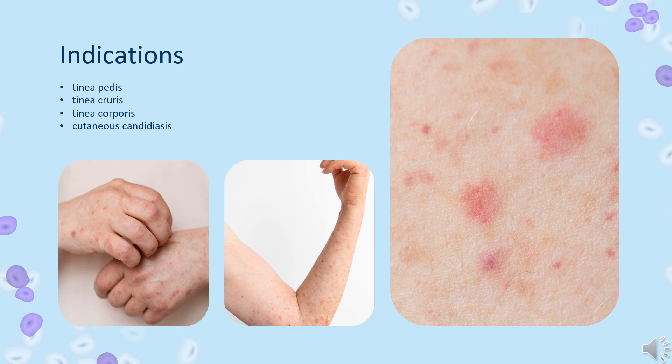Econazole is indicated for topical application in the treatment of tinea pedis, tinea cruris, and tinea corporis caused by Trichophyton rubrum, Trichophyton mentagrophytes, Trichophyton tonsurans, Microsporum canis, Microsporum audouinii, Microsporum gypseum, and Epidermophyton floccosum, in the treatment of cutaneous candidiasis, and in the treatment of tinea versicolor.